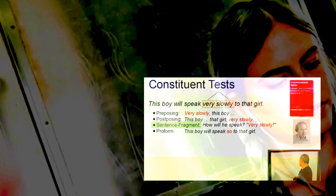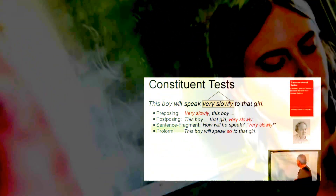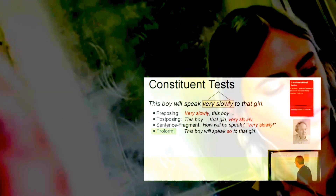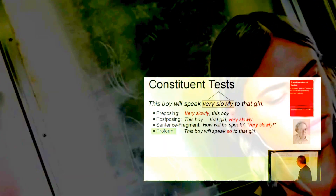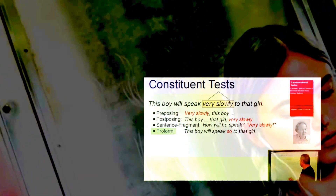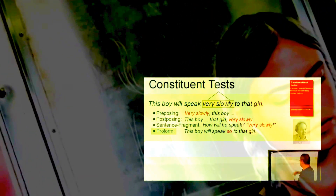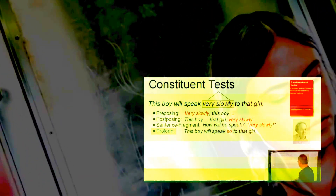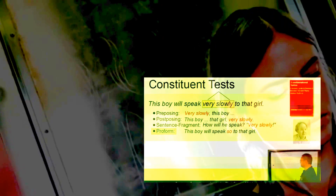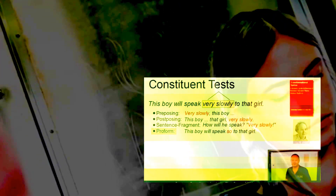And last but not least, we can use a pro-form, namely 'so', to replace 'very slowly': 'This boy will speak so to that girl.'